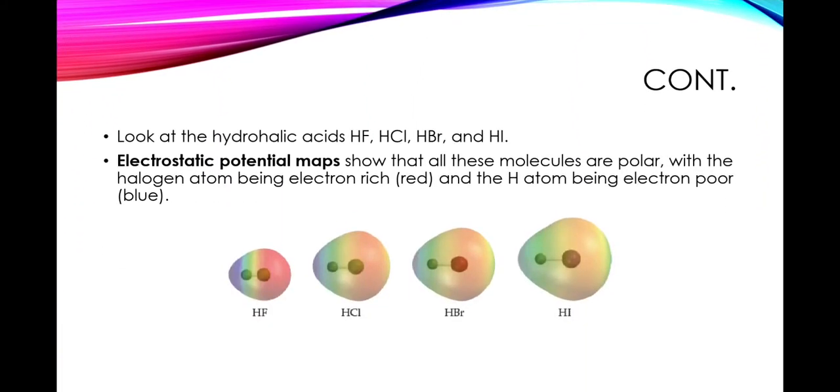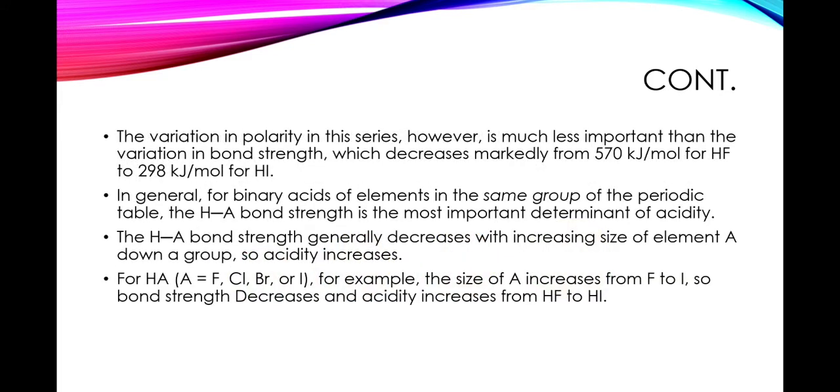Now look at the hydrohalic acids like HF, HCl, HBr, and HI. Electrostatic potential maps show that all these molecules are polar, with the halogen atom being electron-rich (shown in red) and the hydrogen atom being electron-poor (shown in blue). The variation in polarity in this series across the group, however, is much less important than the variation in bond strength. The bond strength decreases markedly from 570 kilojoules per mole for HF to 298 kilojoules per mole for HI.